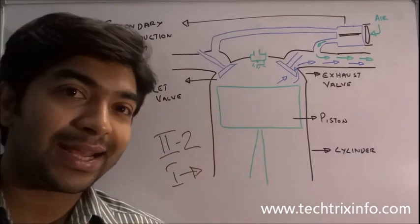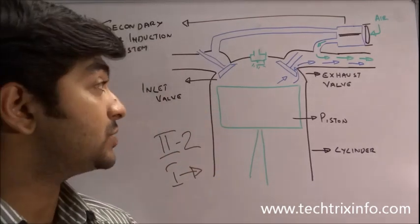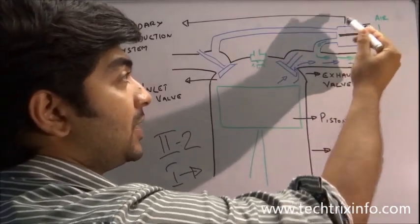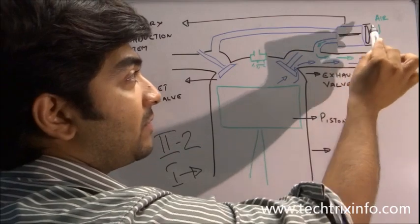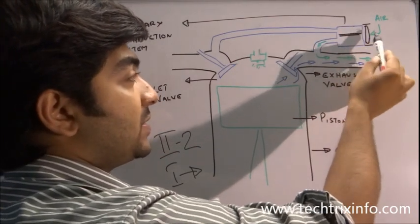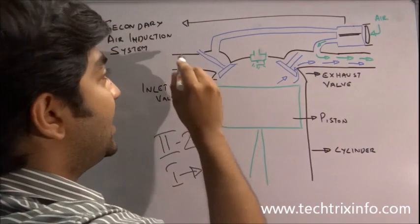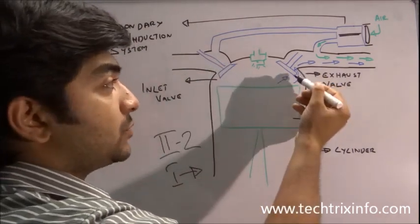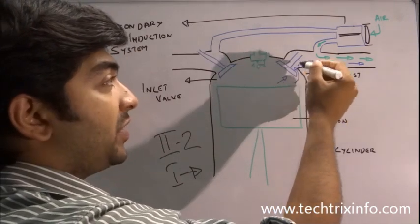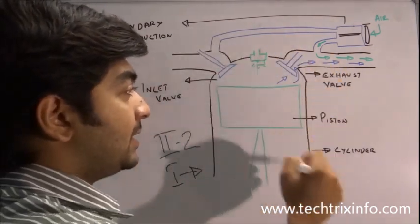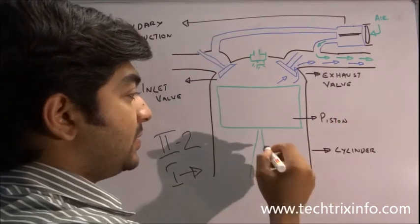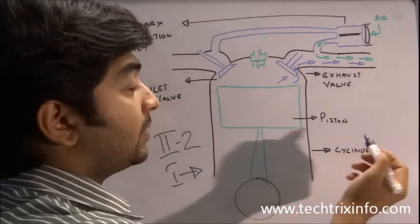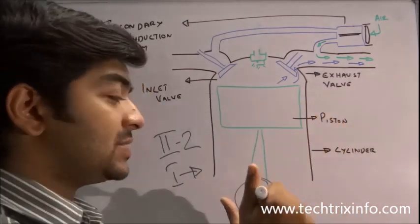So today we'll be talking about the secondary air induction system — where it is used and why. Here you can see the secondary air induction system. It consists of a valve and two diaphragms on both sides. This is the inlet valve marked in blue, and this is the exhaust valve also marked in blue. We also have the spark plug, cylinder, piston, and connecting rod with the crankshaft.